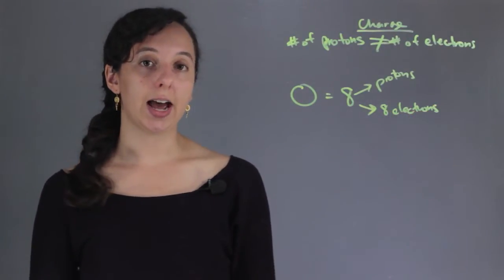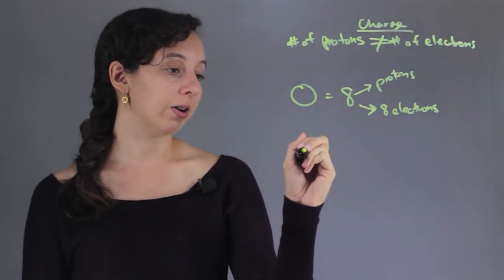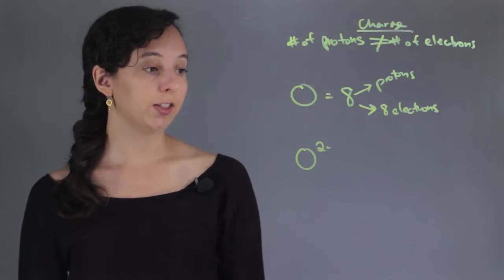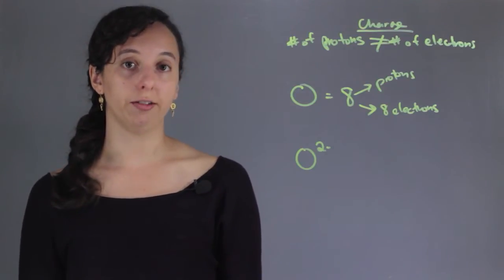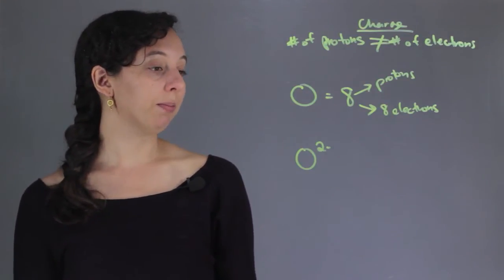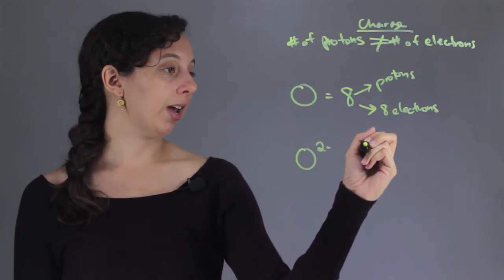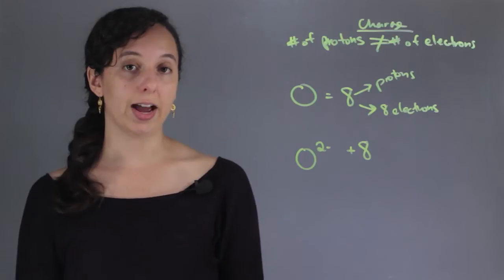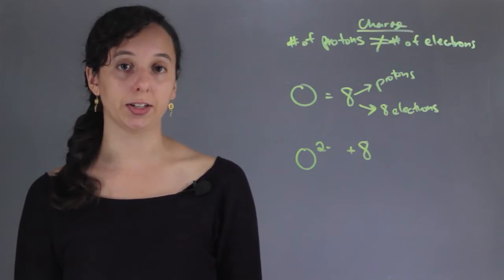But let's say I don't have just an oxygen atom. Let's say I have an oxygen atom and it also says two minus on it. This means it has an overall charge of negative two. So what that means is that it still has to have eight protons. There's no getting around that. If it has eight protons, it's oxygen. If it doesn't, it's not oxygen.